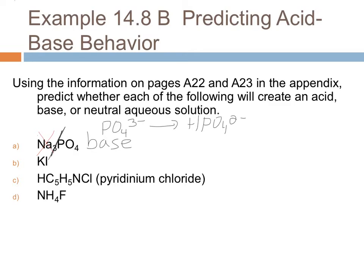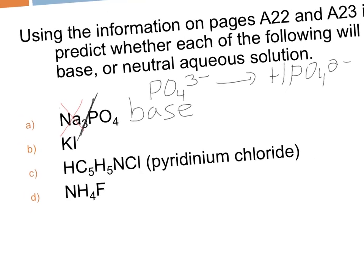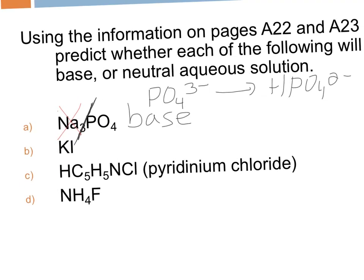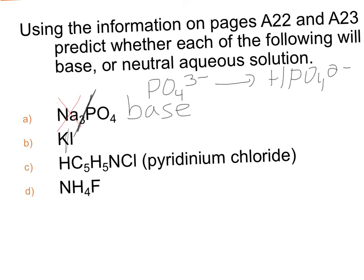When we look at KI, if we separate those ions out into the potassium and the iodine, we do the same thing. The potassium is a metal. It will not affect the pH. Iodine is the conjugate of HI. Since HI is a strong acid, the iodine is a weak, neutral conjugate. It's neutral because HI is strong. Therefore, this solution will be neutral. It will have a pH of 7. KI is a neutral salt.